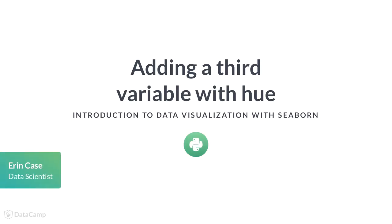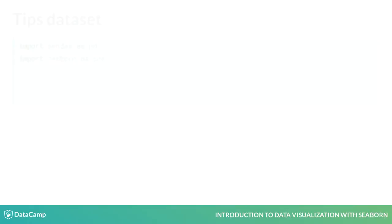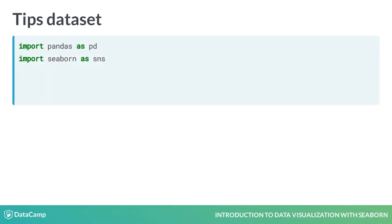We saw in the last lesson that a really nice advantage of Seaborn is that it works well with Pandas dataframes. In this lesson, we'll see another big advantage that Seaborn offers: the ability to quickly add a third variable to your plots by adding color. To showcase this cool feature in Seaborn, we'll be using Seaborn's built-in TIPS dataset.